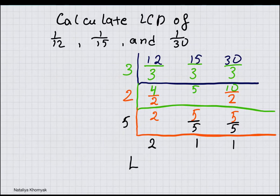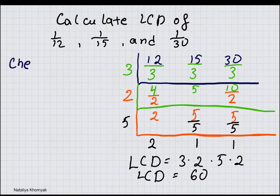In this problem, least common denominator will be 3 times 2 times 5 times 2, which is 60. If you wish to check, just divide 60 by each of the denominators just to make sure all of them go into 60 evenly.